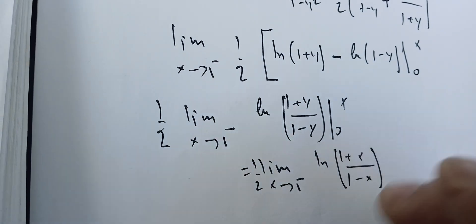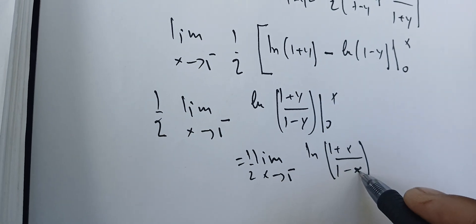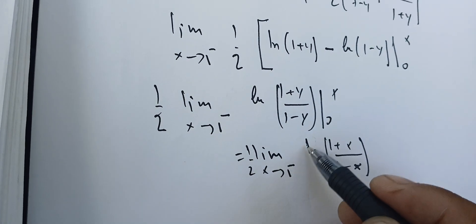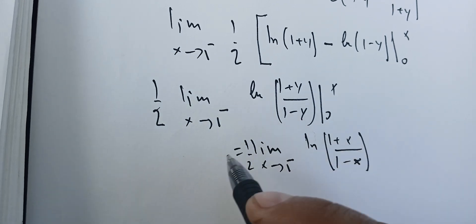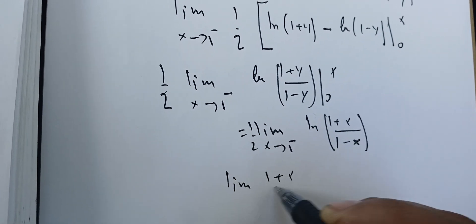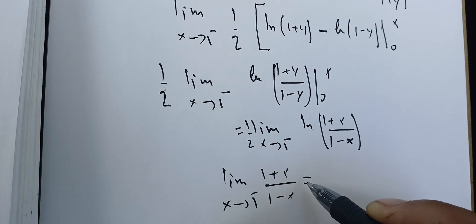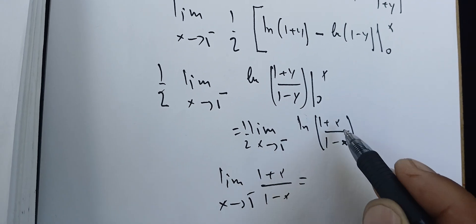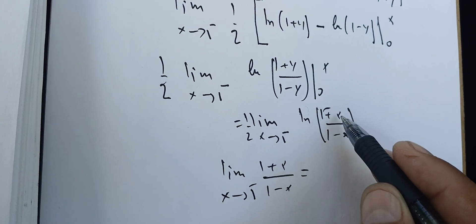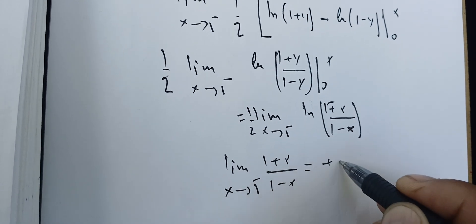Since the natural log is continuous, I can take the limit inside, but the problem is the limit of 1 plus x over 1 minus x as x goes to 1 from the left is going to be something positive over something very small, so that's plus infinity. And the natural log of plus infinity is just plus infinity, and therefore this integral doesn't exist.